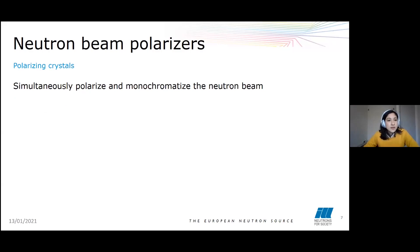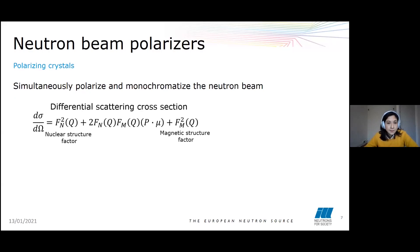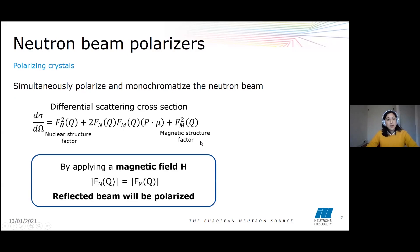Polarizing crystals simultaneously polarize and monochromatize the neutron beam. They have a differential scattering cross-section given by an equation that has a contribution from both the nuclear and the magnetic structure factor. If we apply a permanent magnetic field H in the crystal, the form factors will be equal and the reflected beam will be polarized.